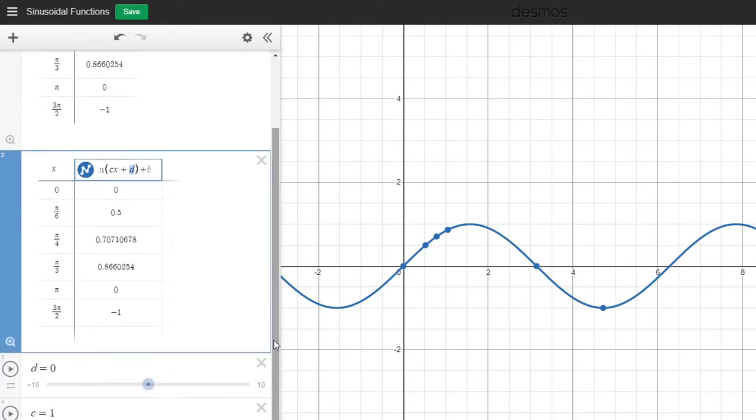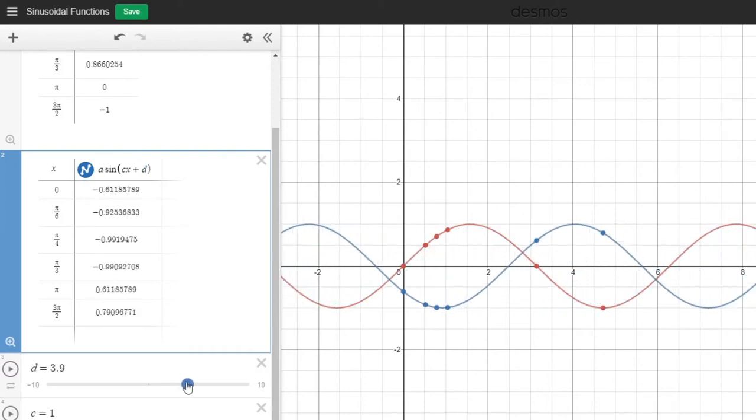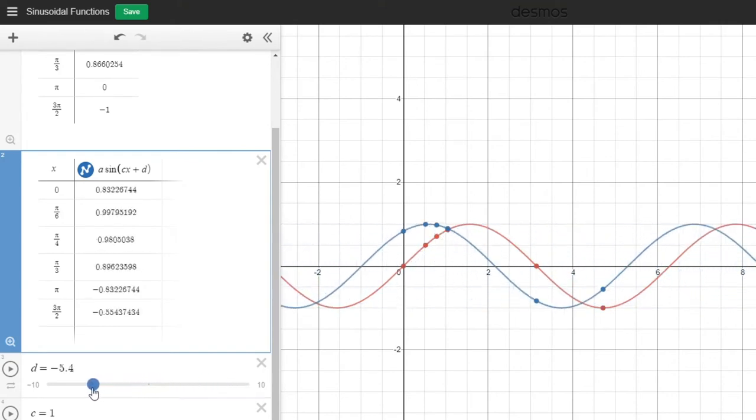Essentially, this is what's called a phase shift or a horizontal translation where the graph is moving left or right. And so I'm just going to demonstrate that here. So I'm increasing the D value, and you can see the graph is moving left as D increases. And as I decrease D, the graph is moving to the right.